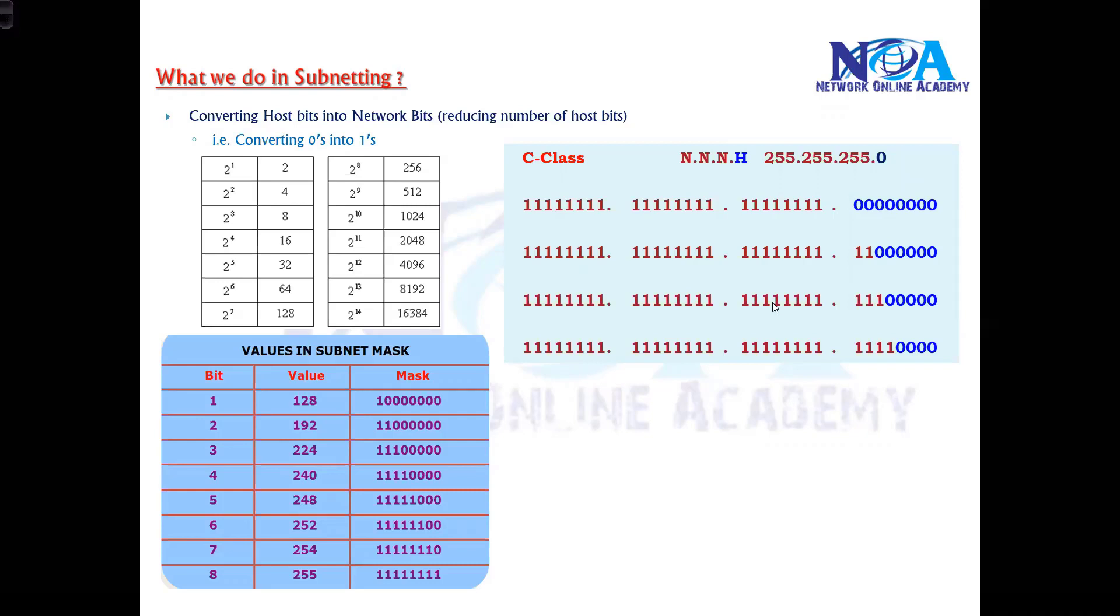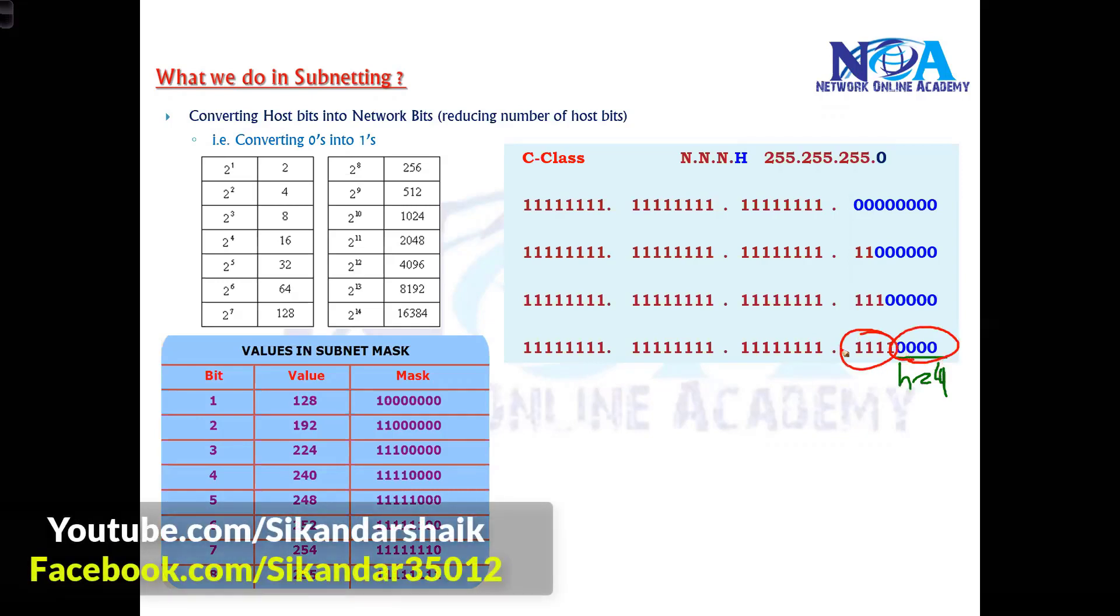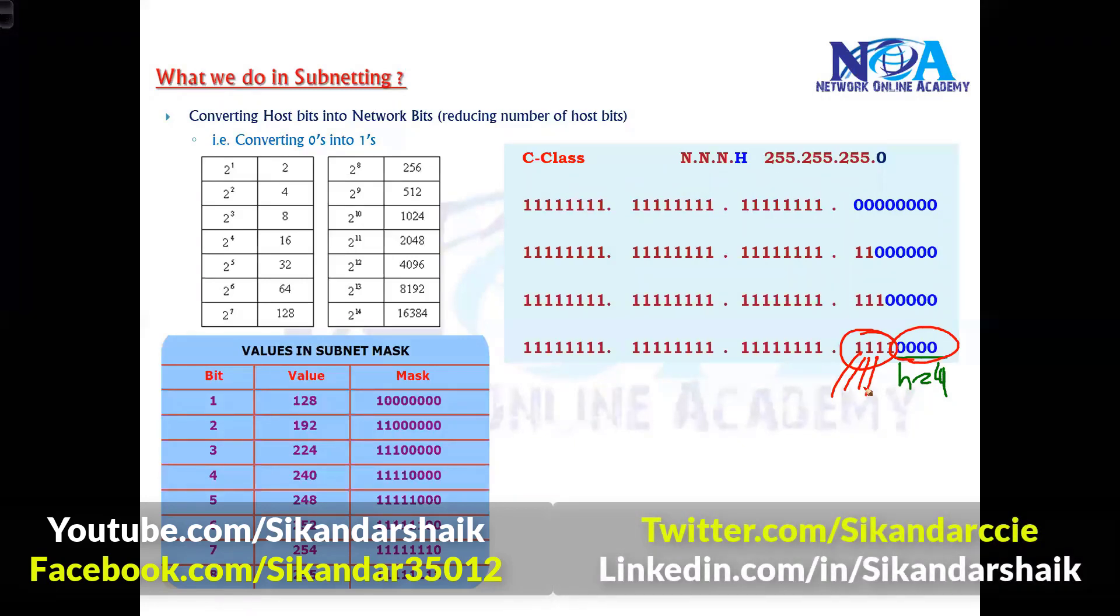I just wanted to give an overview of what we do in subnetting. We are just reducing the number of host bits to reduce the size of the network, which means whatever the number of host bits I require—like I require only four, we use host bits only four—the remaining we just convert them into network. We tell them that I want to use them as a network because I don't need them.